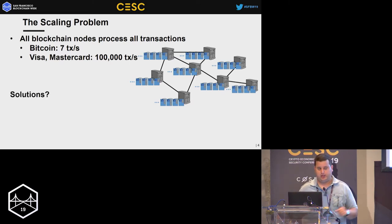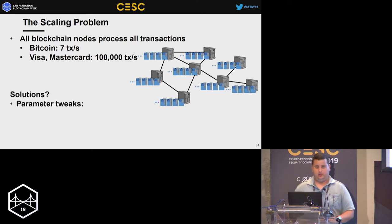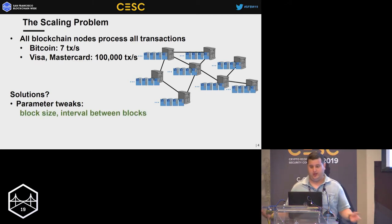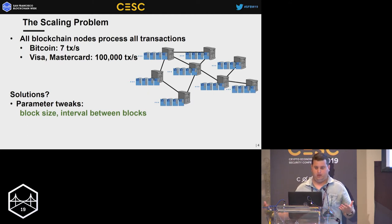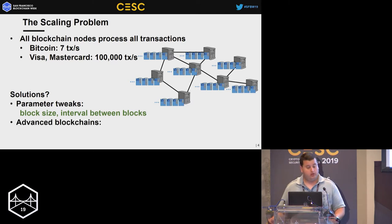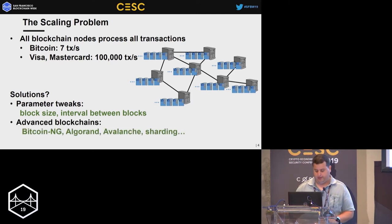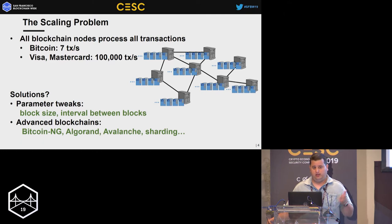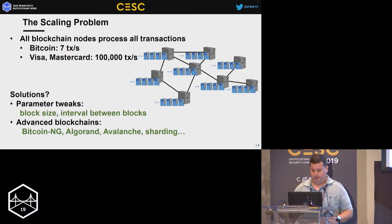What are the solutions? You can change the blockchain itself — tweak the parameters, increase the block size, decrease the interval between blocks — but it's sort of a band-aid; you still have the same root problems. You can also change the protocol itself. Examples include Bitcoin NG, Algorand, Avalanche, and sharding solutions. All of them change layer one and claim to increase throughput.